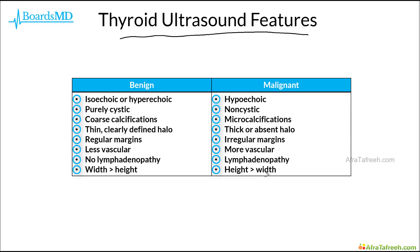What's also remarkable is that many of these features can be applied to other nodules — for example, lung nodules — including the calcifications, the vascularity, as well as the margins of the lesions. Often these are preserved across various types of nodules in other organ systems of the body.